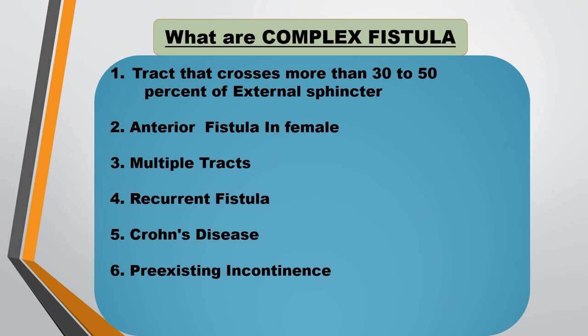Complex types of perineal fistula include: fistulas crossing more than 30 to 50% of the external sphincter, anterior fistula in females, multiple tracts, recurrent fistula, Crohn's disease, and pre-existing incontinence. These are classified as complex fistulas.